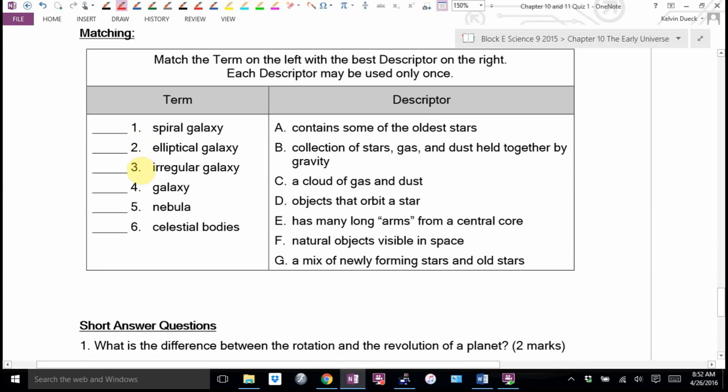Match the term. One, two, three, four, five, six. One, two, three, four, five, six. Ah, seven. So, one of these I'm not going to use. I think spiral galaxy is E. Yes? Long arms from a central core. Elliptical galaxy. You know what? That contains some of the oldest stars. I remember that. An irregular galaxy. Probably G. You know what? I'm going to come back to that. A galaxy. You know what? A galaxy, I think, is a collection of stars, gas, and dust held together by gravity. A nebula is a cloud of gas and dust. Celestial bodies. Those are objects that orbit a star. G, I think it's E, A, G, B, C, D. Is that right?